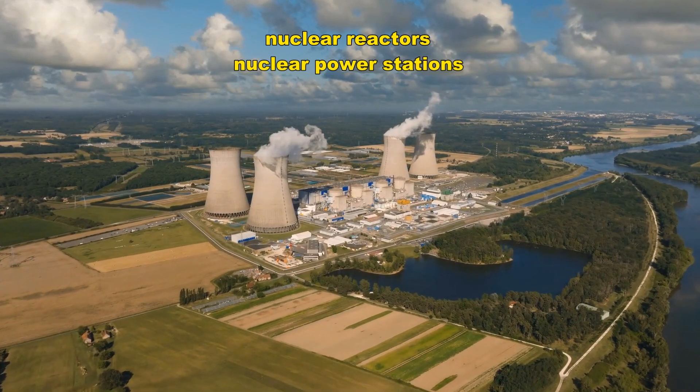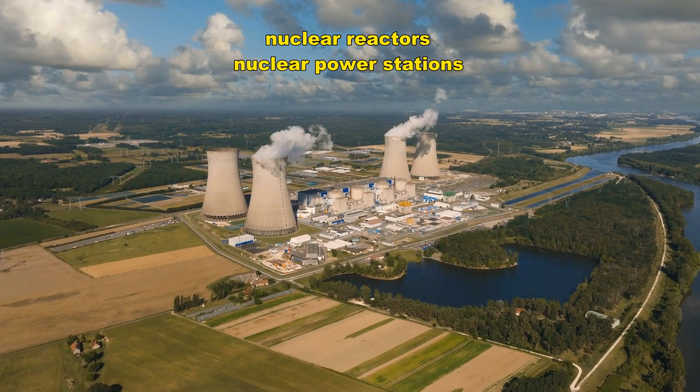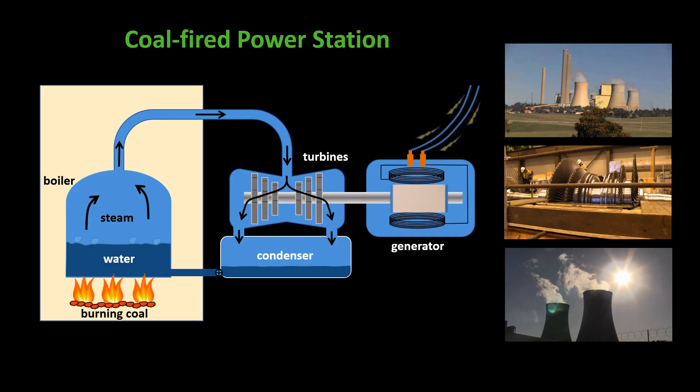So we need to look at the basics of how nuclear power stations work. Let's start by looking at a coal-fired power station, just because it's a little easier. Coal is burned in a boiler and the water in the boiler turns to steam. Because of the large pressure involved, the steam passes through pipes and spins turbines, which then spin the generator, which produces electricity.